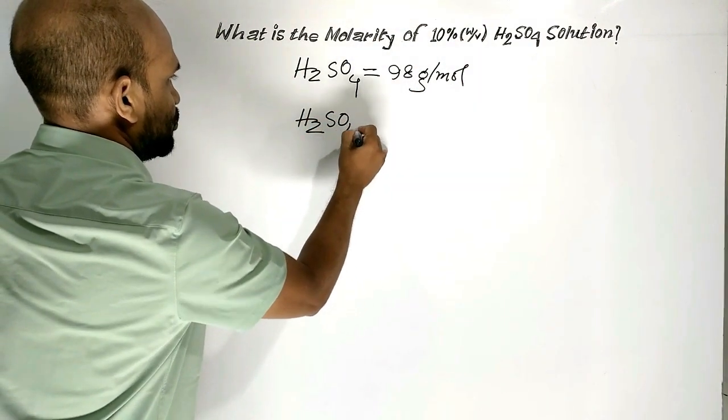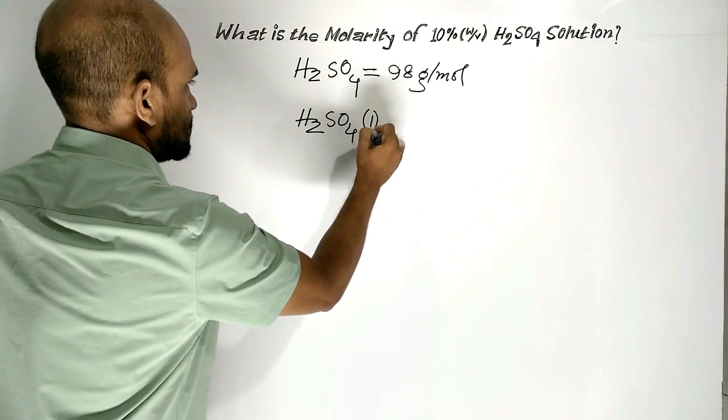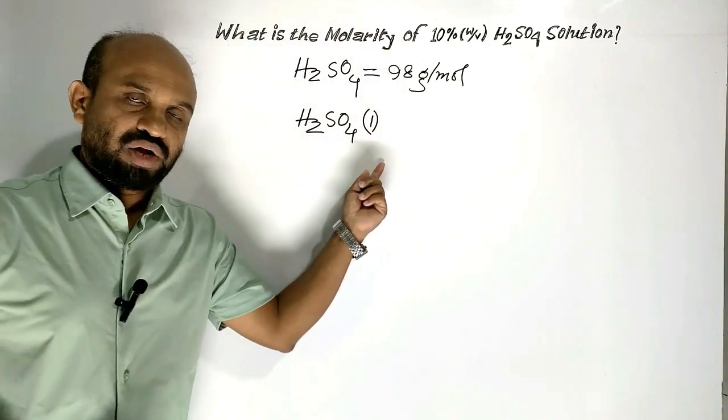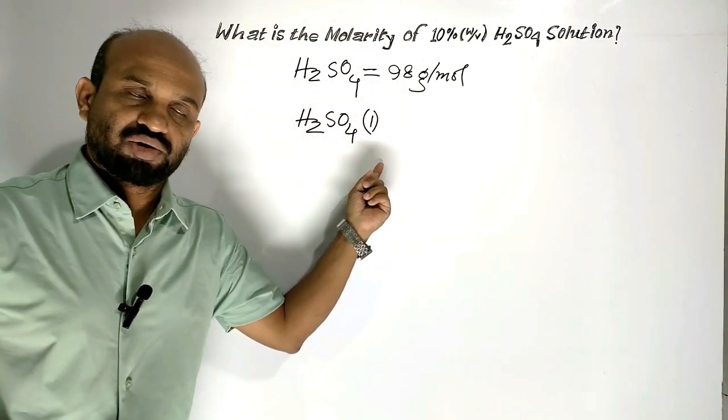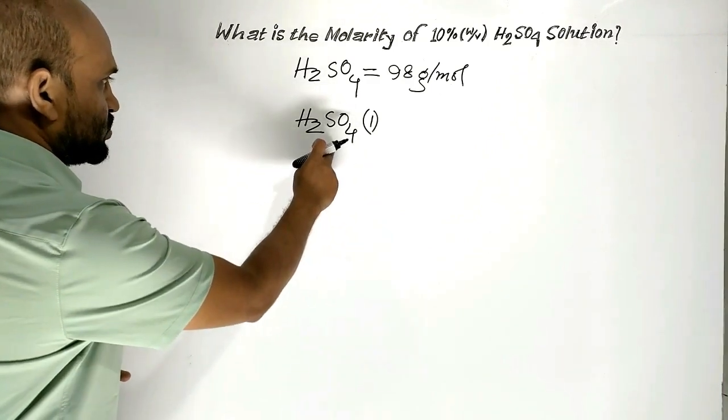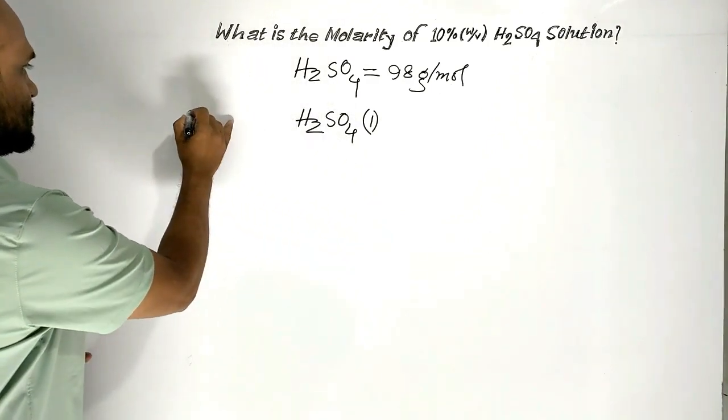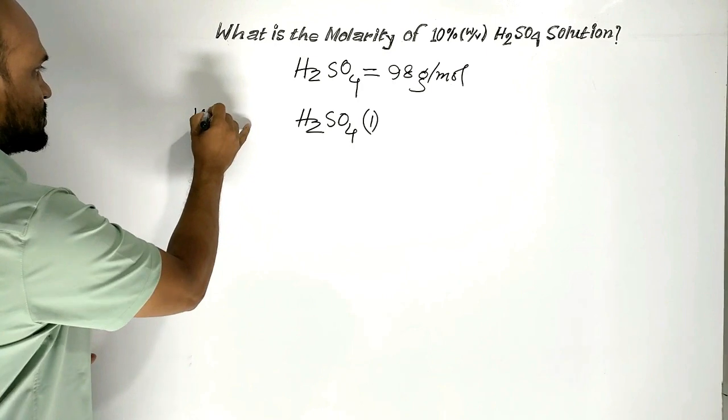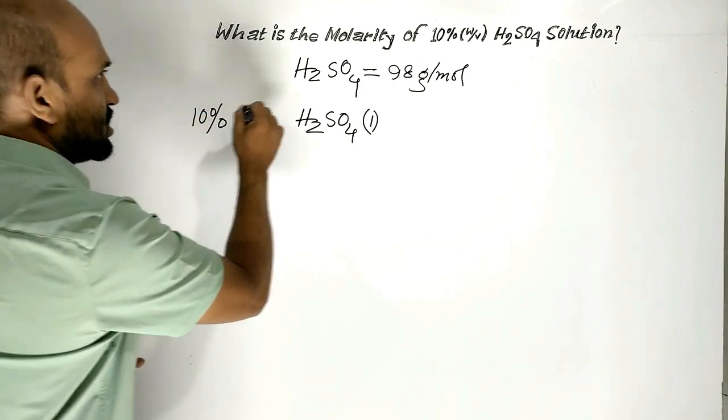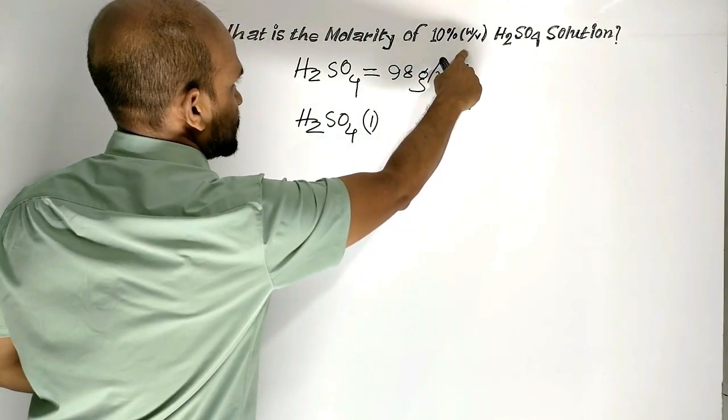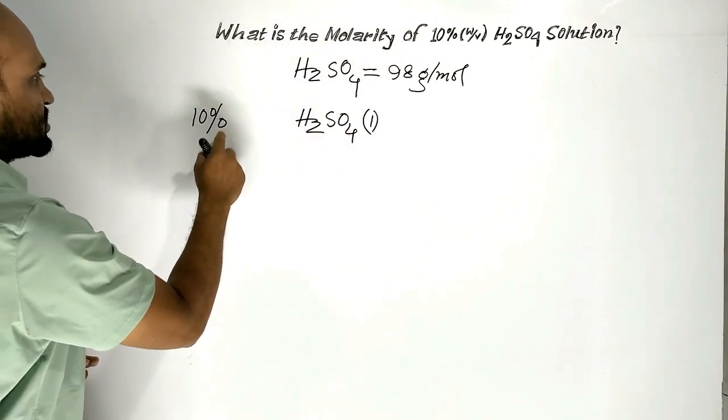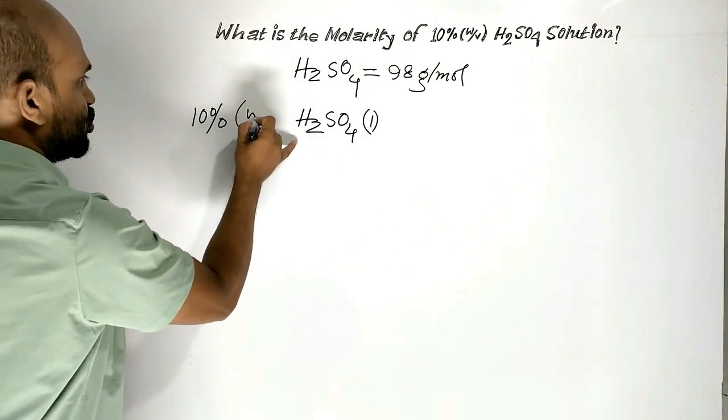Sulfuric acid is an oily, corrosive liquid at room temperature. 10% sulfuric acid here, the unit is mentioned in percent mass by volume.